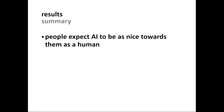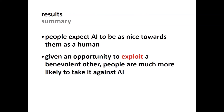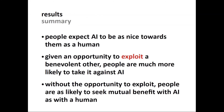To summarize so far: people expect artificial agents to be as nice toward them as they expect humans to be. But given an opportunity to exploit a cooperative, benevolent other, people are much more likely to take that opportunity when interacting with AI than with a human. Without the opportunity to exploit, on the other hand, people are as likely to seek mutual benefit and take the risk in doing so with a machine as when they interact with a human.